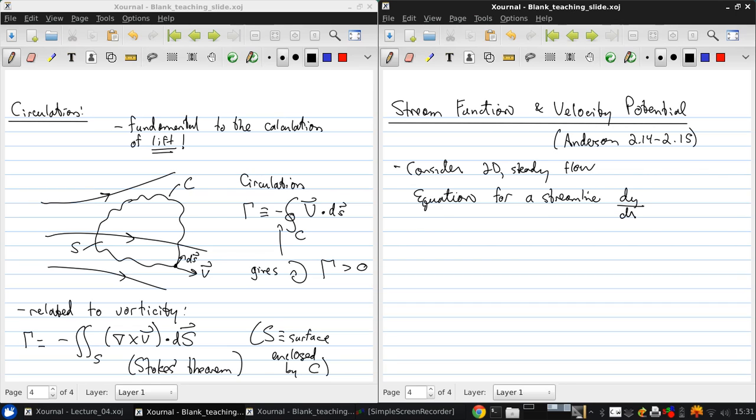The equation for a streamline is dy/dx = v/u. V is the vertical or y component of velocity, and u is the horizontal or x component of velocity.